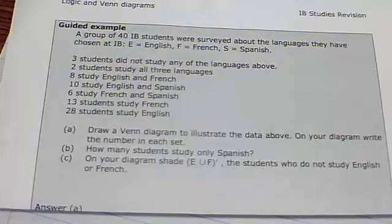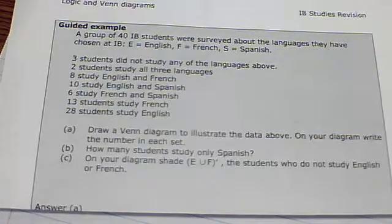So let's look at what we have. A group of 40 IB students were surveyed about the languages they have chosen: E for English, F for French, or S for Spanish. They give us a running list of everything that's going on, and they want us to draw a Venn diagram of this and answer a few questions.